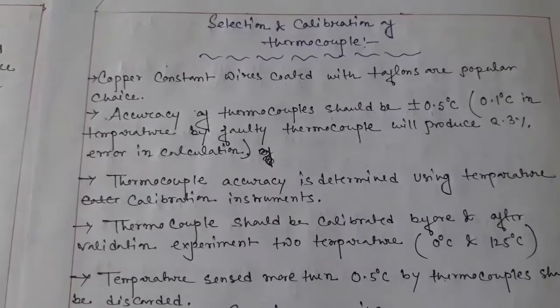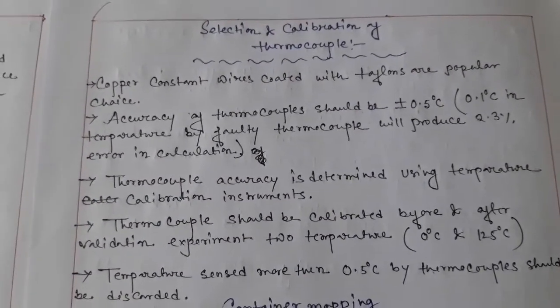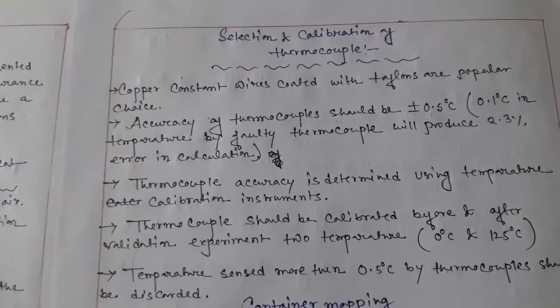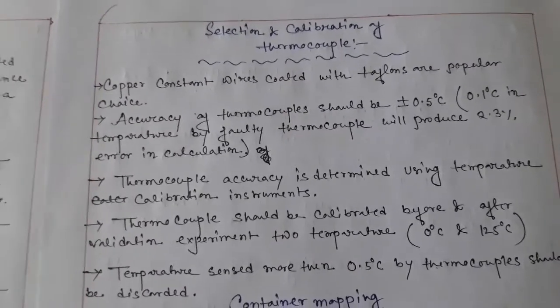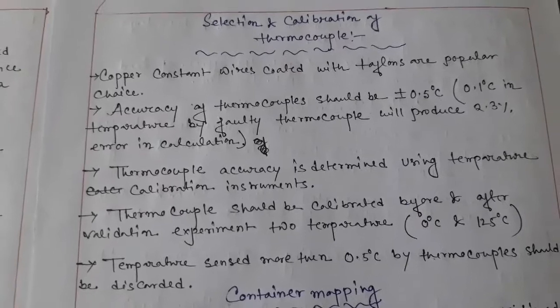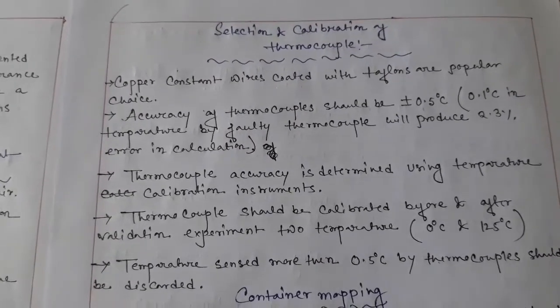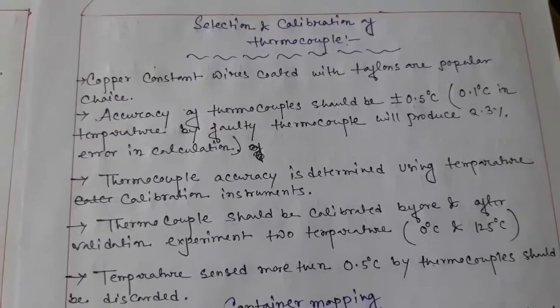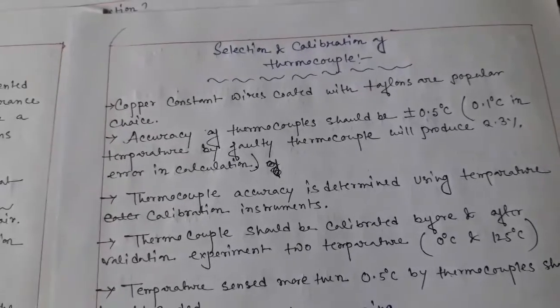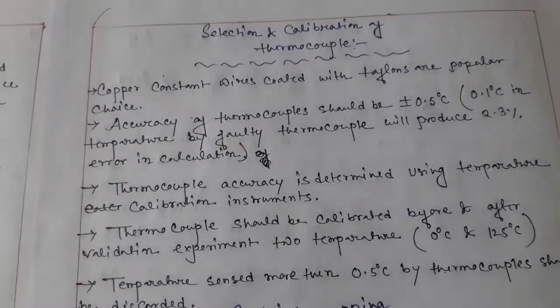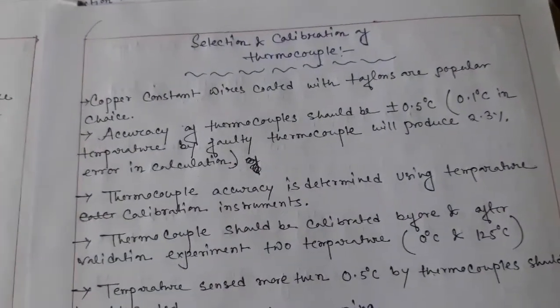Next is the selection and calibration of thermocouples. Thermocouple means it produces heat. Copper-constantan wires coated with Teflon are a popular choice. The accuracy of a thermocouple should be ±0.5 degrees centigrade. A 0.1 degree centigrade error in temperature by a faulty thermocouple will produce a 2.3% error in calculation, so temperature must be carefully maintained.